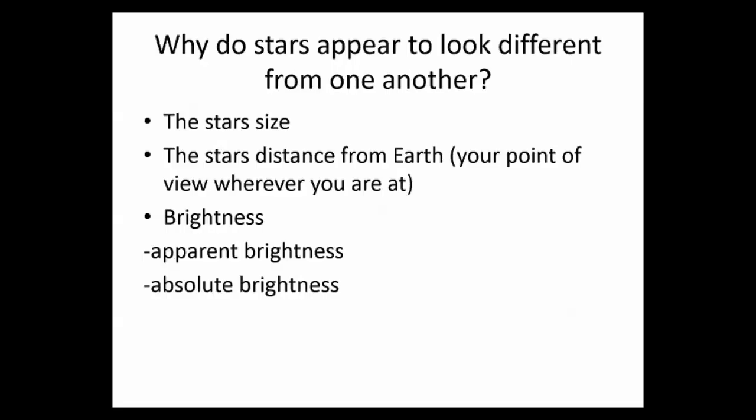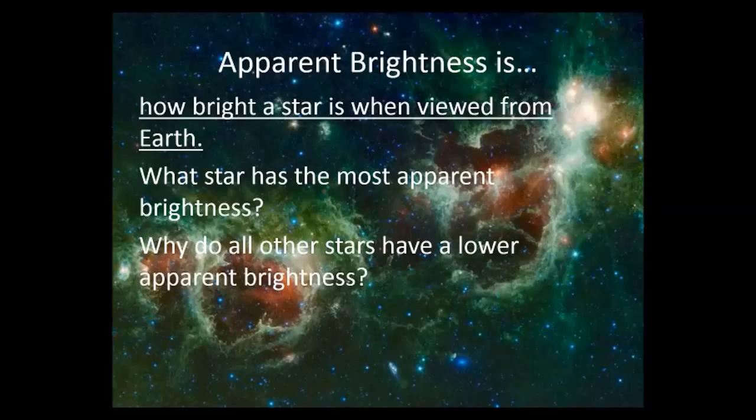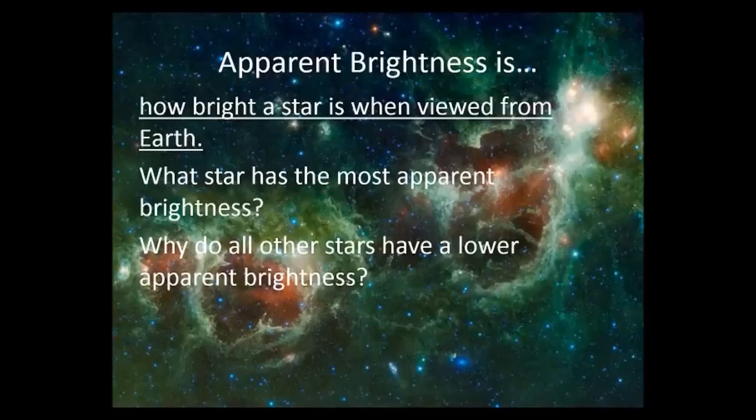There's two types of brightness. There's apparent brightness and absolute brightness. Apparent brightness is how bright a star is when viewed from Earth. So if you're standing on Earth and you're looking, which one appears to be the brightest? Which star has the most apparent brightness? Which one appears to be the brightest star of them all? And why do all other stars have a lower apparent brightness? The star with the most apparent brightness is the sun, because it blocks out all other stars during the day. You can't even see any others because it's so bright. All the other stars have a lower apparent brightness not because it's the biggest, because we just saw in that video that it's actually kind of small. It's the closest. It's the only star in our solar system.